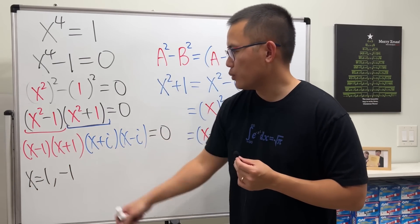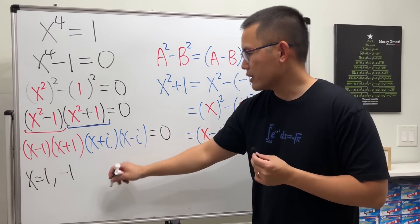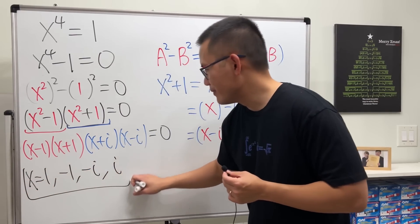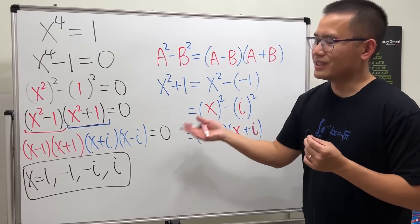From here, we get x is equal to negative 1. From here, we get negative i. From here, we get i. So, we did end up with four solutions.